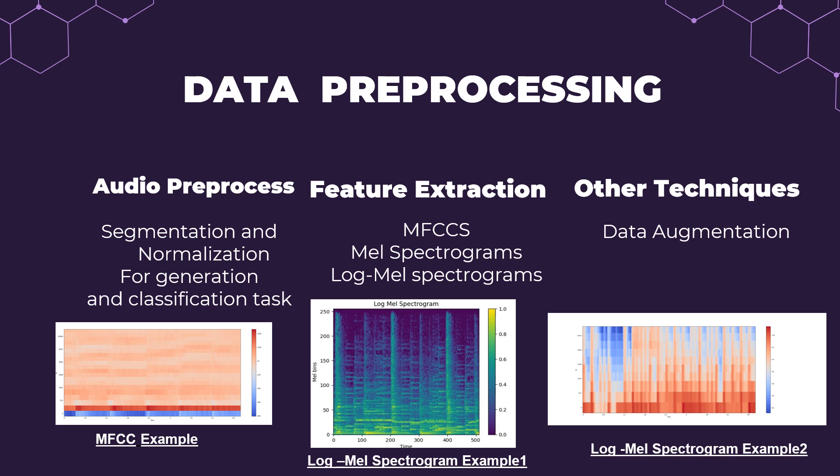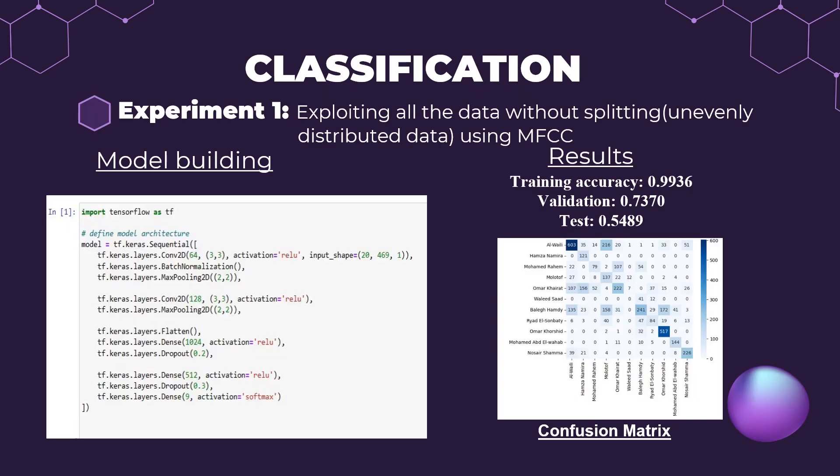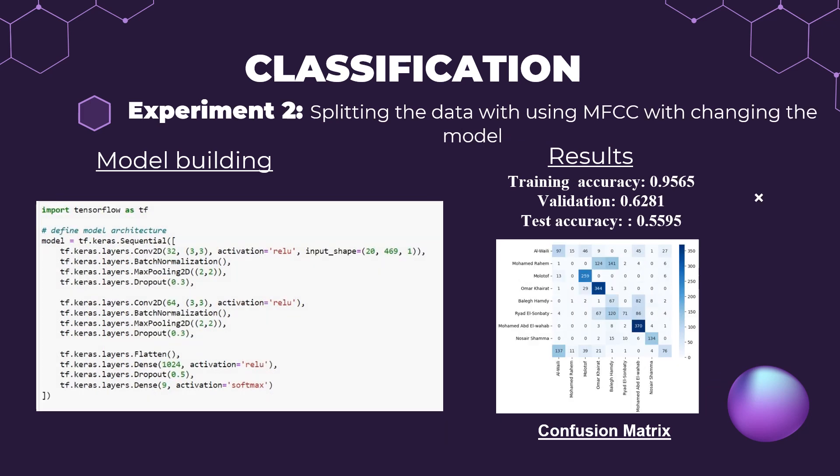For the classification part, we conducted five different experiments. In experiment one, we used all the data without evenly distributing it among the composers. The results showed very large overfitting. The model consisted of two convolution layers, then one or two dense layers, and one output layer. For the second experiment, we collected the data evenly, and compared to the previous one, training and validation became closer to each other, so overfitting was reduced by a small amount. This model architecture was simpler than the previous one.